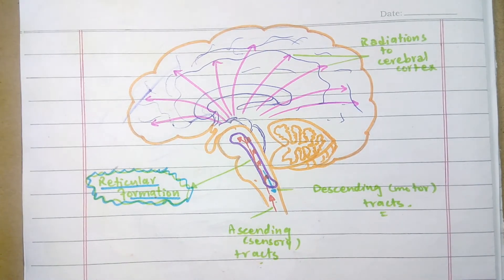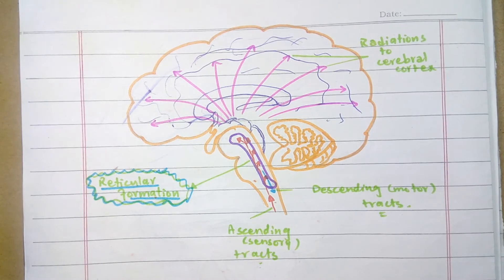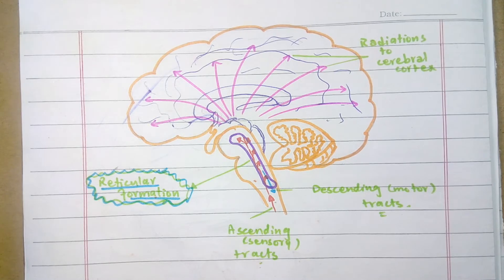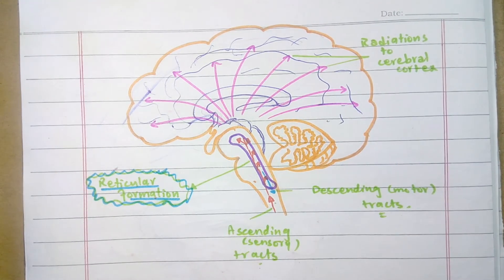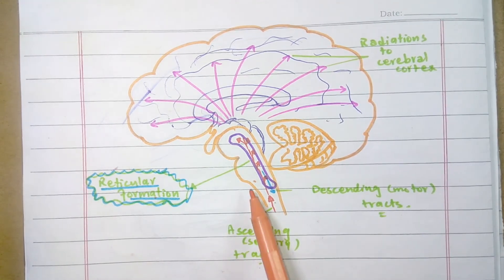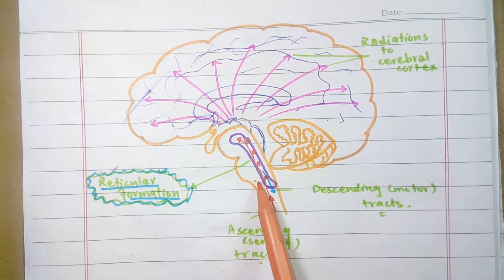Now let's look at the functions of the reticular formation in detail. You often think of how do we stay alert? How does a person stay awake? This control of alertness and consciousness is related to the reticular formation.